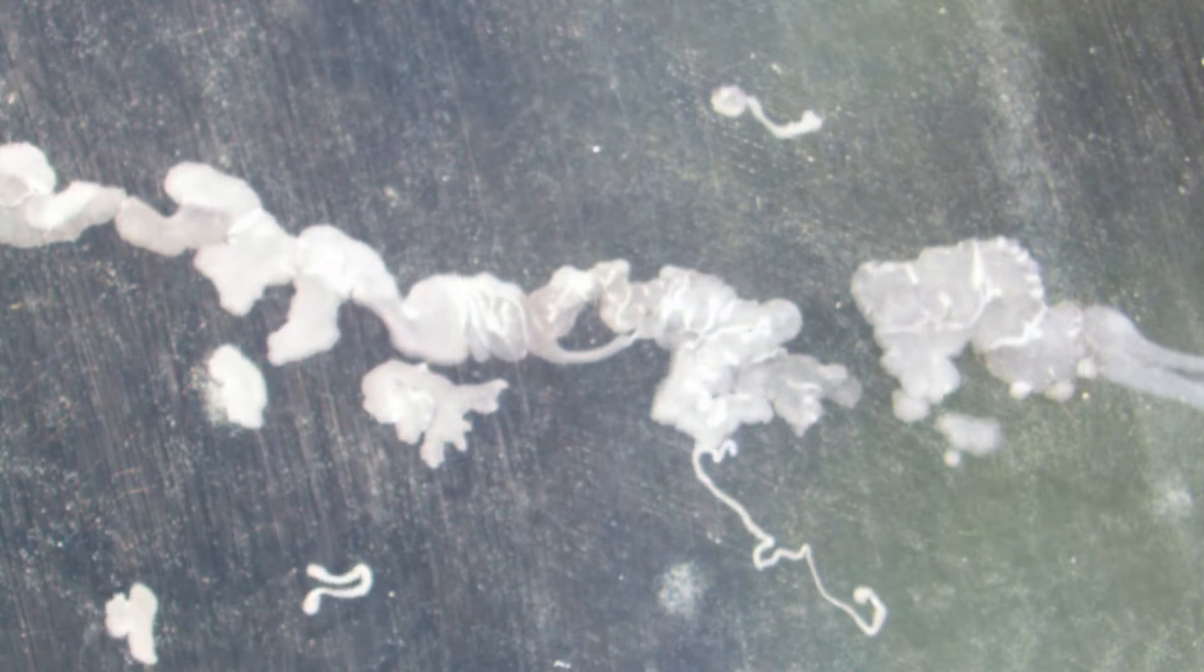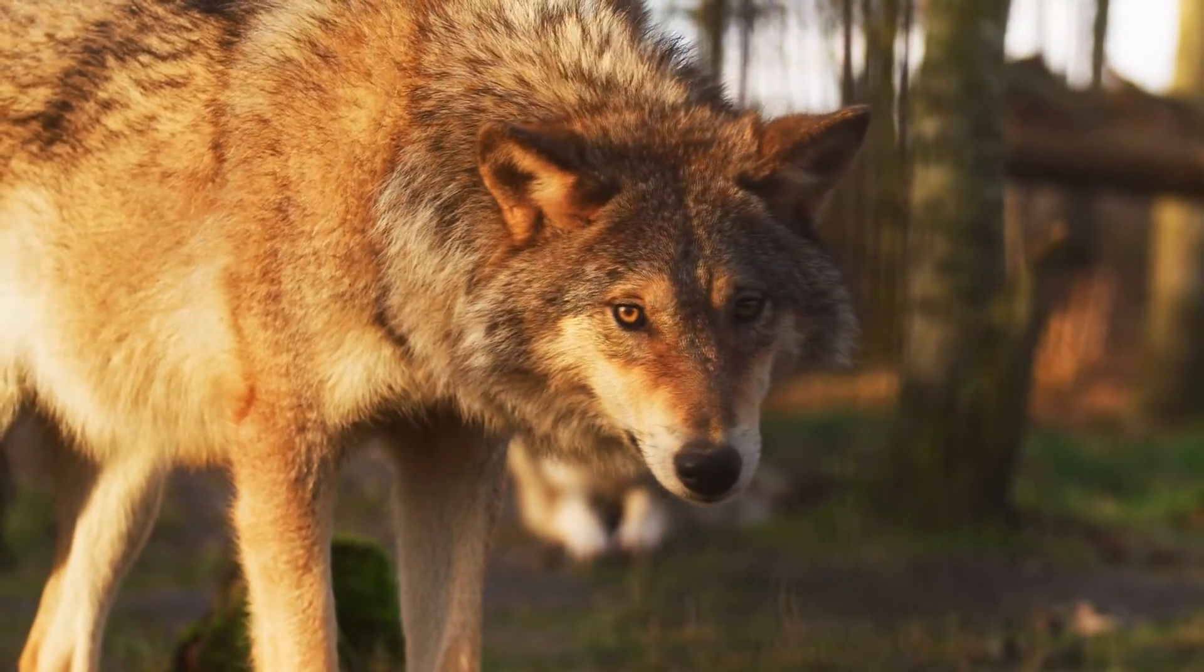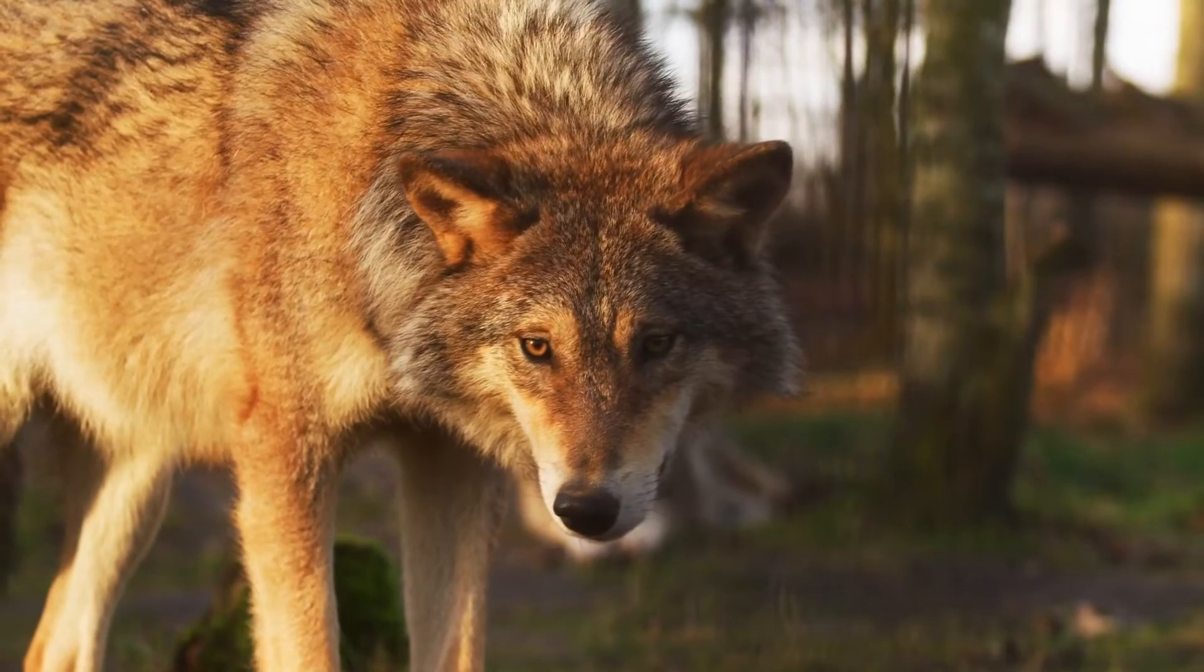Placozoa are the simplest animals living on our planet, at least that we know of. That's not meant to be an insult, they're seriously simple in design. Placozoa are made up of just a handful of different cell types. When compared to the hundreds of cell types found in mammals, a handful truly does indicate a simple design.